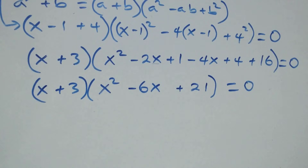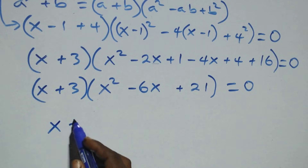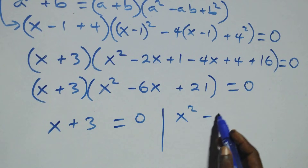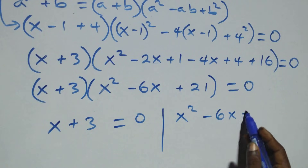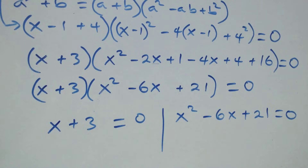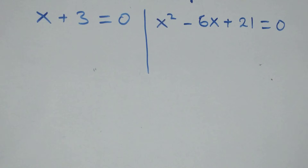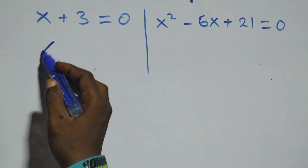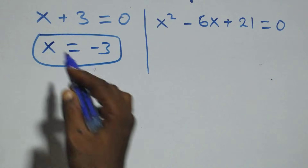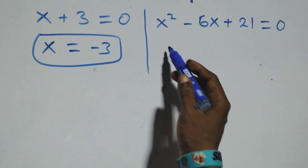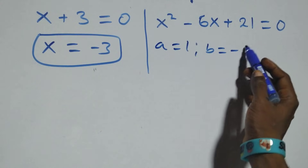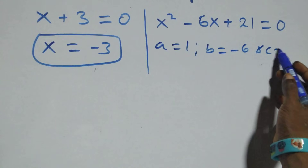We have two possible cases: first, x plus 3 equals to 0, or we have x squared minus 6x plus 21 equals to 0. Solving the first: x equals to minus 3, which is a real solution. For the quadratic equation, a equals 1, b equals minus 6, and c equals 21.